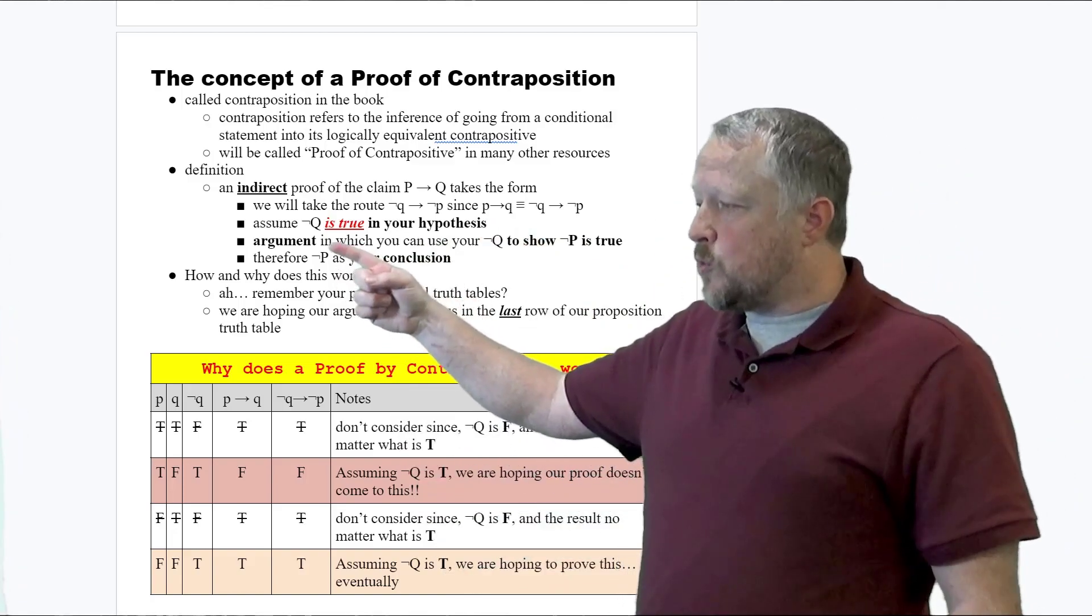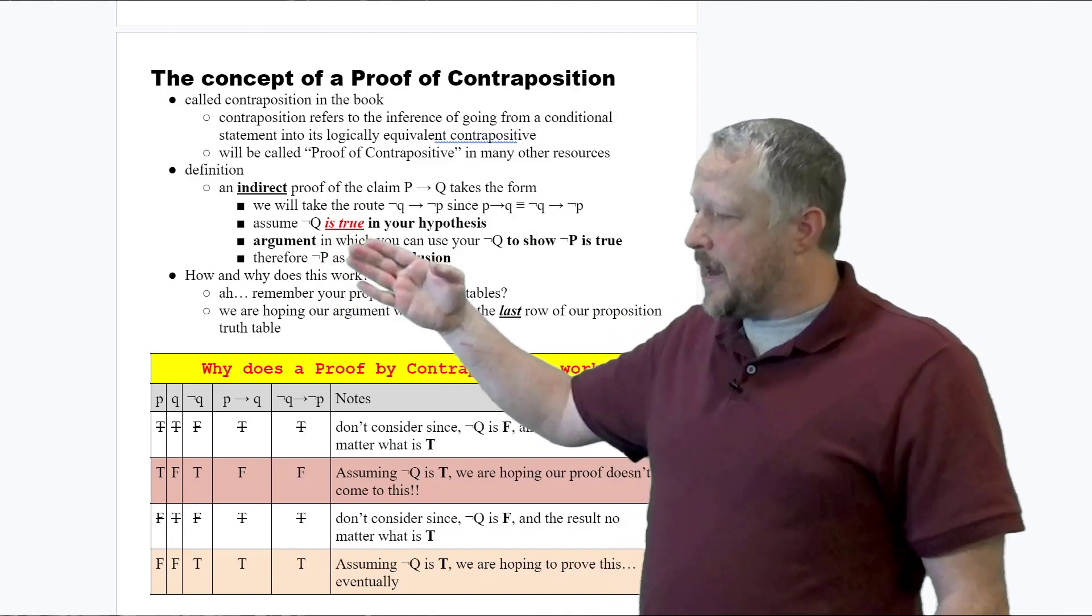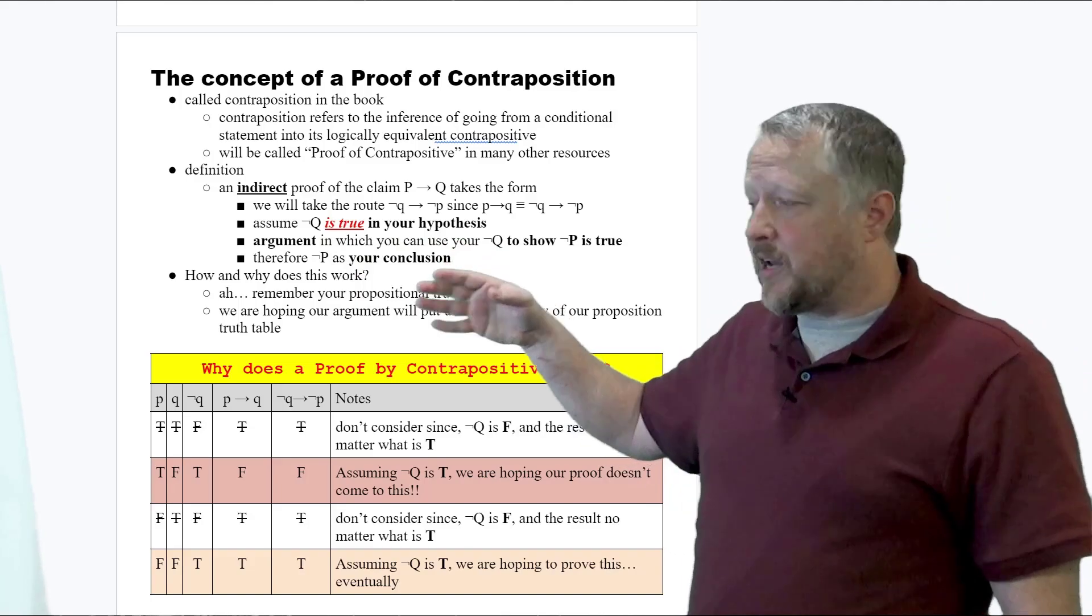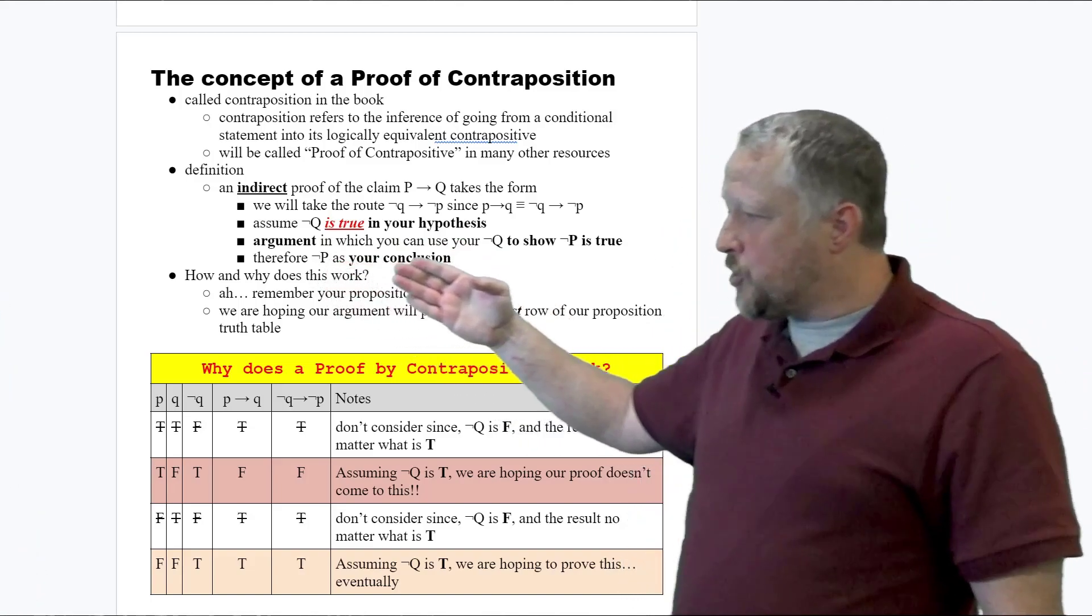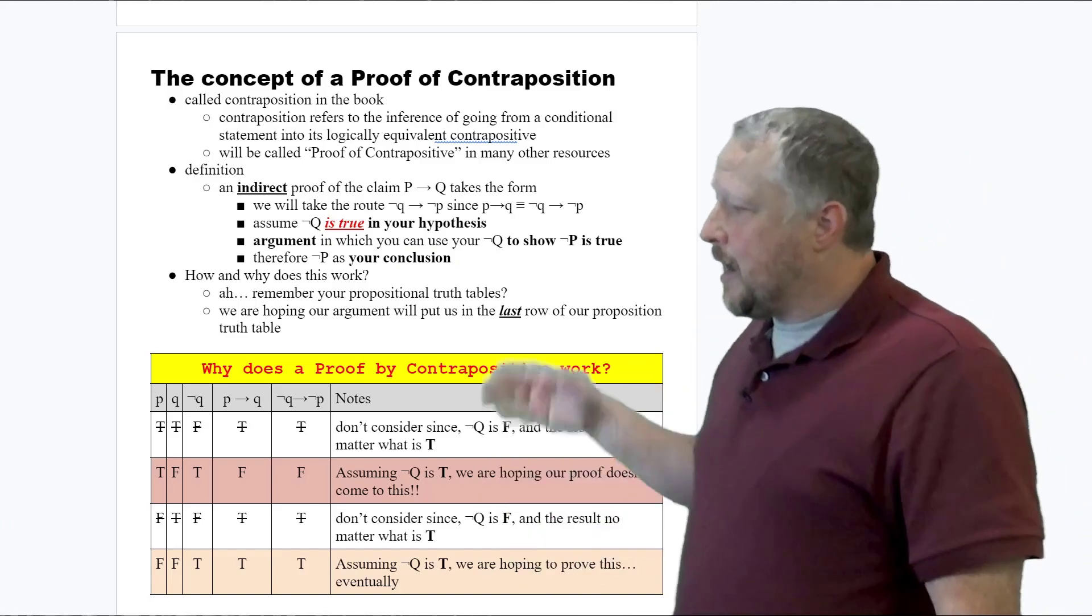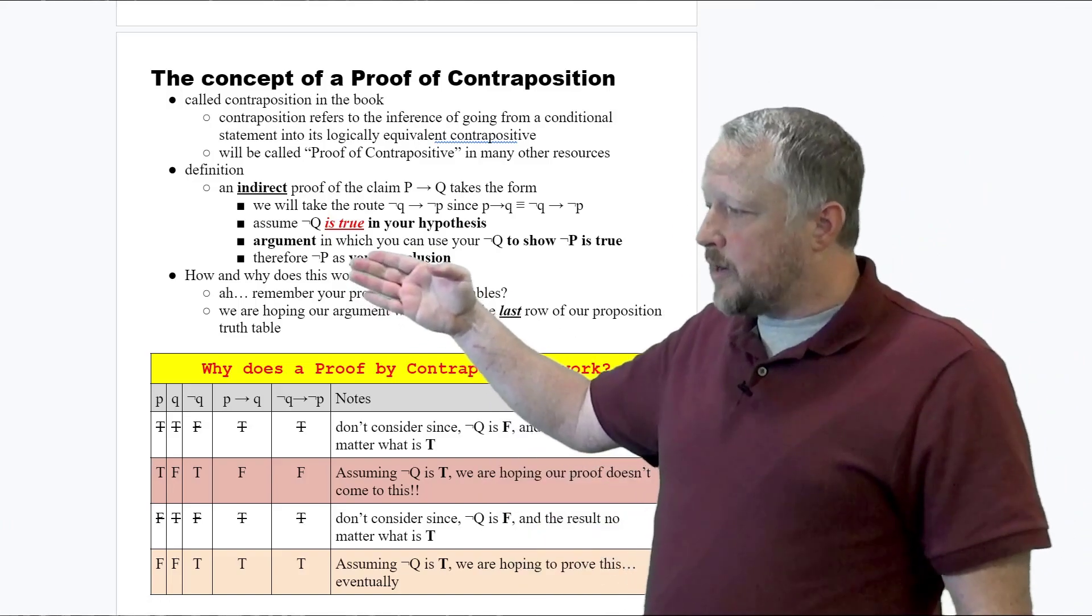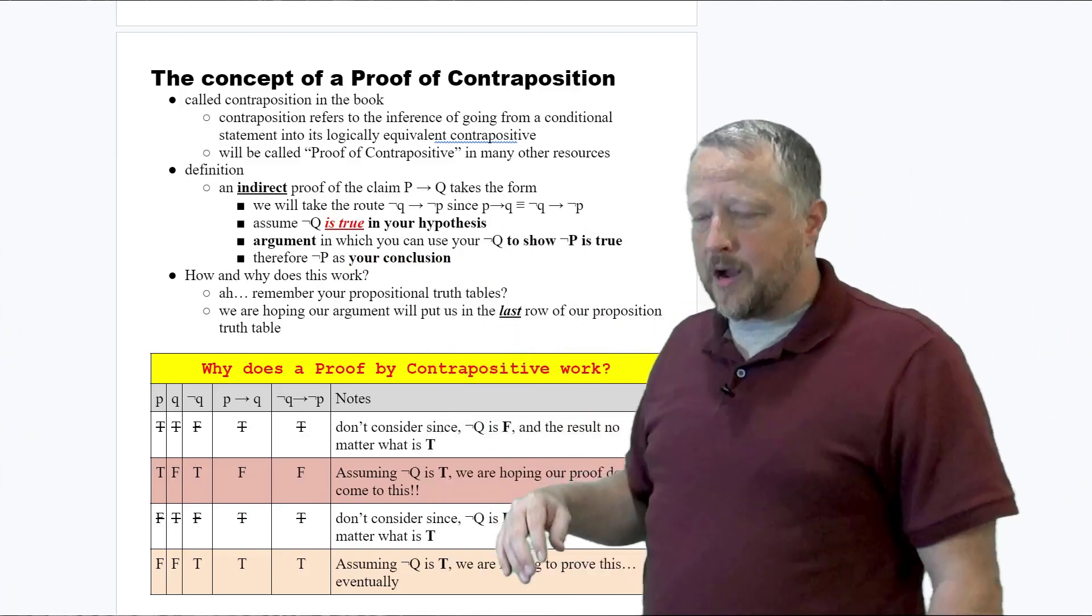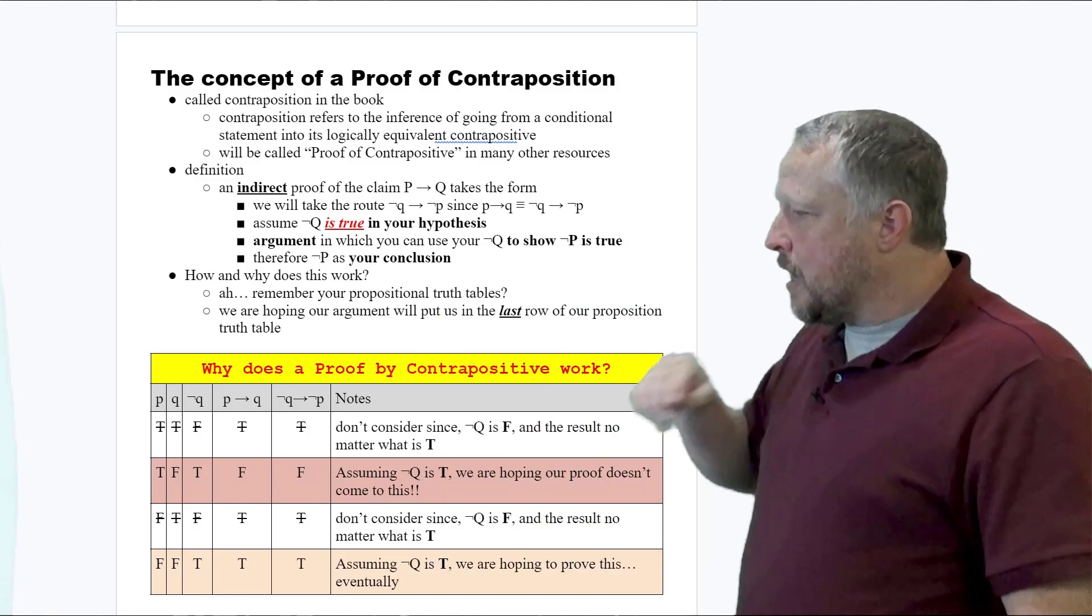We're going to take a different route to prove the same equivalency of our P implies Q. When we do that, we're going to assume not Q or negated Q is true in our hypothesis, and it's the same three steps again. We're going to do our argument, which you can use your negated Q to show that negated P is true. Then, once we find our negated P, we can use that in our conclusion and say, hey, we found it. Put our stamp on it and go from there. How does this work out?